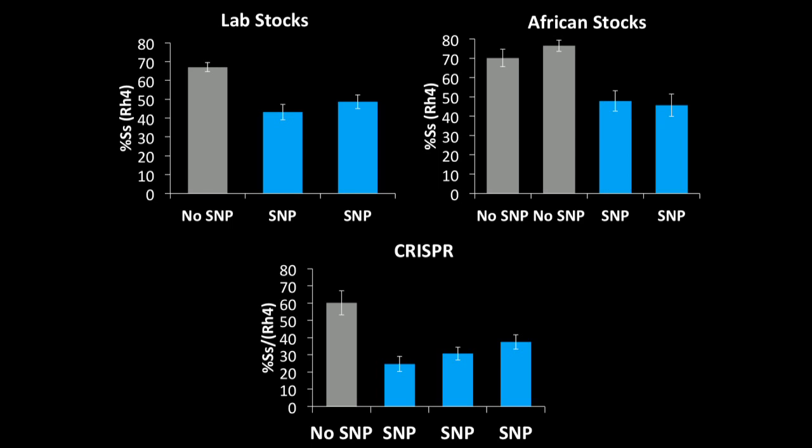And then finally, to really put the nail in the coffin, we used CRISPR to insert the SNP into a wild type line. And in three independent isolates, we saw a significant decrease in the spineless expression frequency.